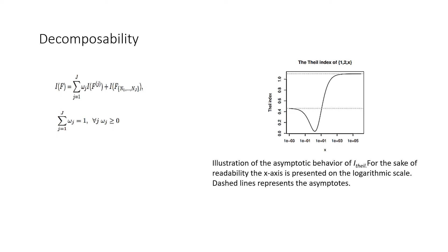Coming to the decomposability part, the generalized entropy measures are the only inequality measures where decomposability and common requirements can be seen together. We have the Pigou-Dalton principle: inequality increases when money is transferred from a poorer person to a richer one, and the scale is invariant. Because of this, the community is frequently divided into two groups based on factors such as educational attainment, gender, or ethnicity, all of which are of interest in investigating inequality between these categories.